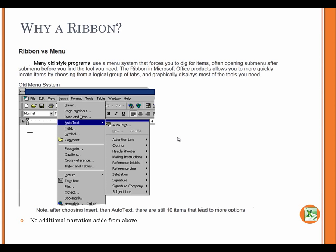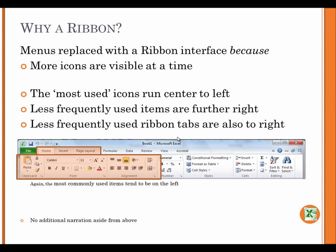Many old style programs use a menu system that forces you to dig for items, often opening submenu after submenu before you find the tool you need. Note, the ribbon in Microsoft Office products allows you to more quickly locate items by choosing from a logical group of tabs and graphically displays most of the tools you need. Note, after choosing Insert, then AutoText, there are still 10 items that lead to more options.